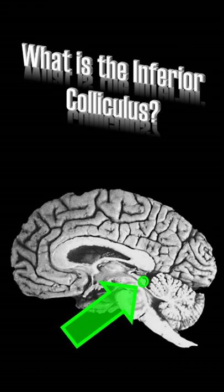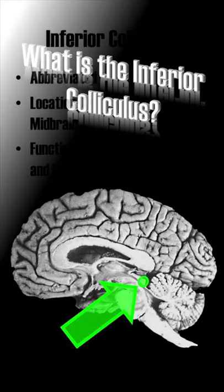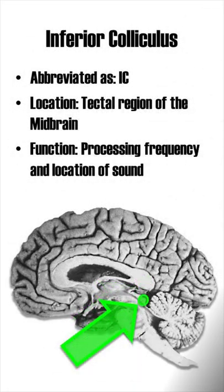What is the inferior colliculus? Abbreviated as IC, the inferior colliculus is located at the tectal region of the midbrain. Its main function is processing sound frequency and sound localization.